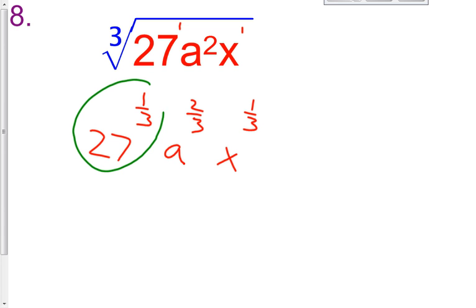27 raised to the 1 third - that can be simplified. This is one of those, as you see, with the 27 with the 3 next to it, hopefully you recognize that 3 cubed is 27. It's one of those numbers that we should keep our eye out for as we go through this chapter.